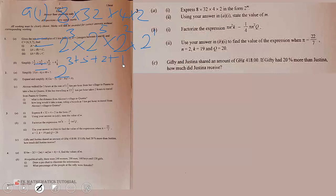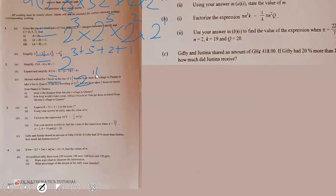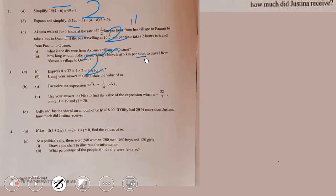So 3 plus 5 is 8, plus 2 is 10, plus 1 gives us 2 exponent 11. Comparing to 2 exponent m, since the bases are the same, m is equal to 11. And the part B(ii) — we are asked to factorize the expression.